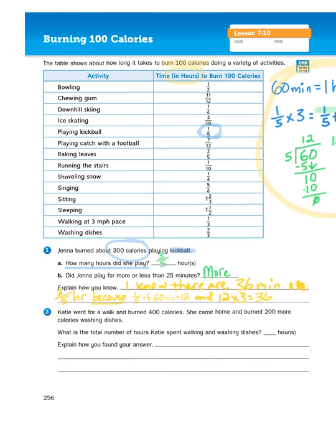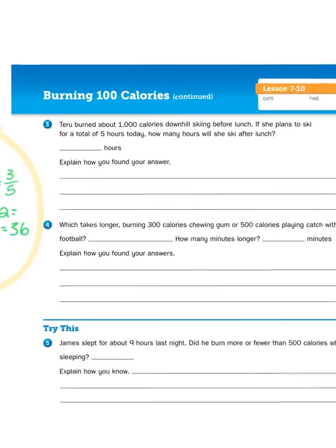So that's how we know that three-fifths of an hour is more than 25 minutes because we know that a fifth of an hour is 12 minutes and 12 times 3 is 36. Okay, let's take a look at another problem. We're going to actually jump over to problem number 3.